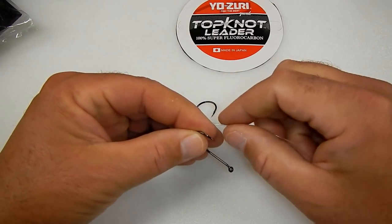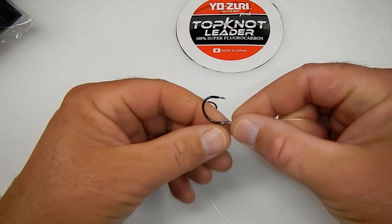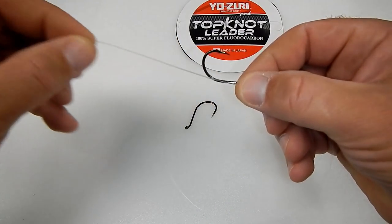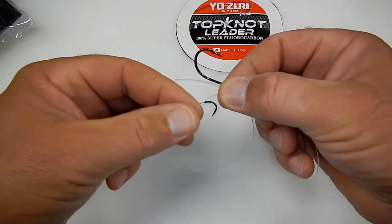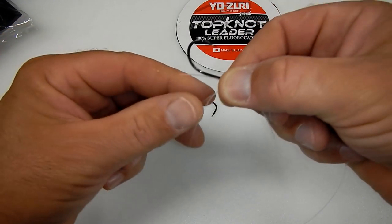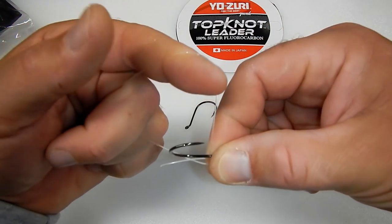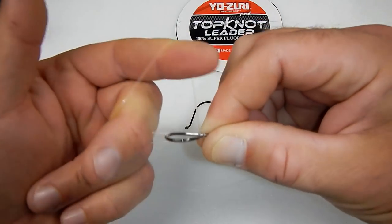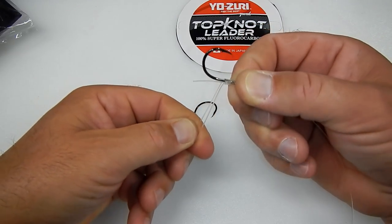There's a lot of ways to do your snells. I personally do my snell this way when I insert the line into the eye of the hook. I then come around, create a little loop, give myself a little working leader right there. Now I'll start looping the fluorocarbon around the shank of the hook and I'm going to do this six times.